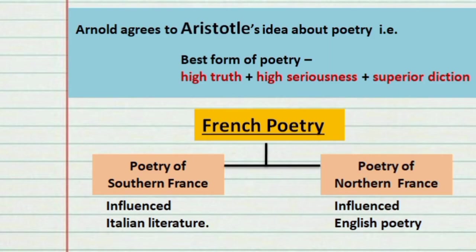Arnold gives a clear idea of what high-standard poetry should be like, and here he agrees with Aristotle's idea of poetry. The best form of poetry should have high truth, high seriousness, and superior diction. This is very similar to the poems written during the neoclassical period. It is based on this that Arnold later starts to classify writers as classics and non-classics in the essay.